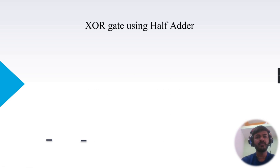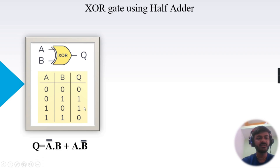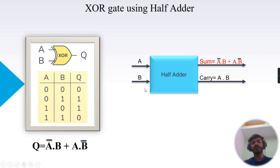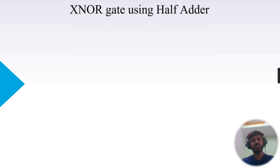Now we'll implement the XOR gate using a half adder. You can see the truth table — if both inputs are different, the output will be high; otherwise, output will be low. The logical expression is Q = A'B + AB'. Implementing the XOR gate using a half adder is very easy, because one of the outputs of the half adder — the sum — is the XOR gate itself: sum = A'B + AB'.